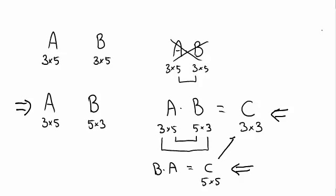And obviously these two matrices cannot be the same as they don't have the same dimension. So B times A cannot be the same as A times B.